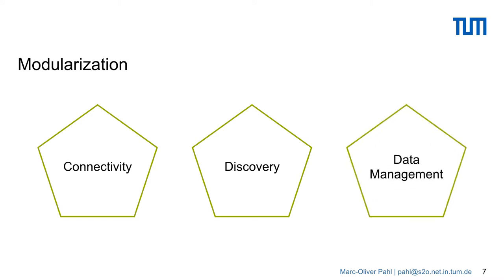The last basic property is data management. We're computer scientists and data management is: you have data coming in, some algorithms do processing, and then you have data coming out that does some control. If you can provide data management as part of your platform so that developers of the applications do not have to take care of it, then this is beneficial, as we will see on the next slides.